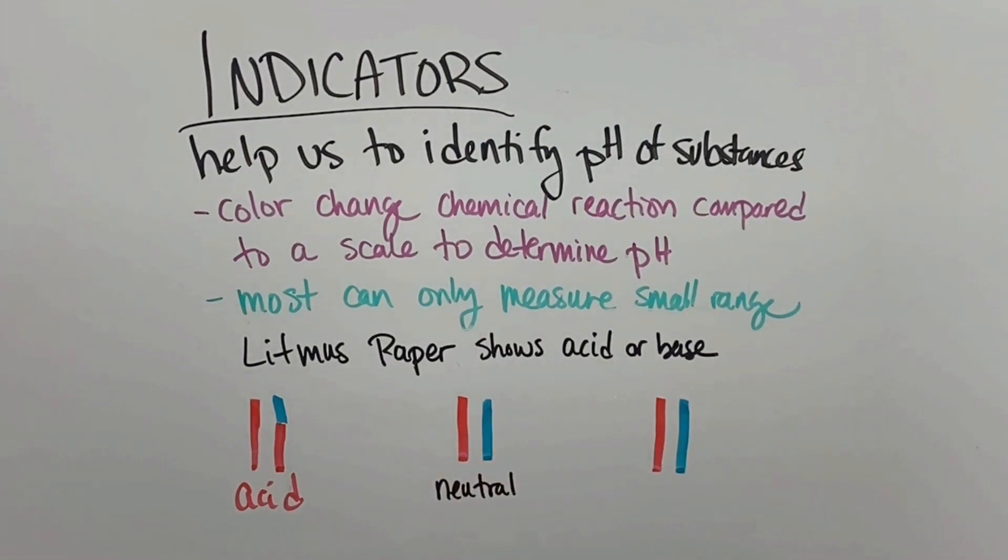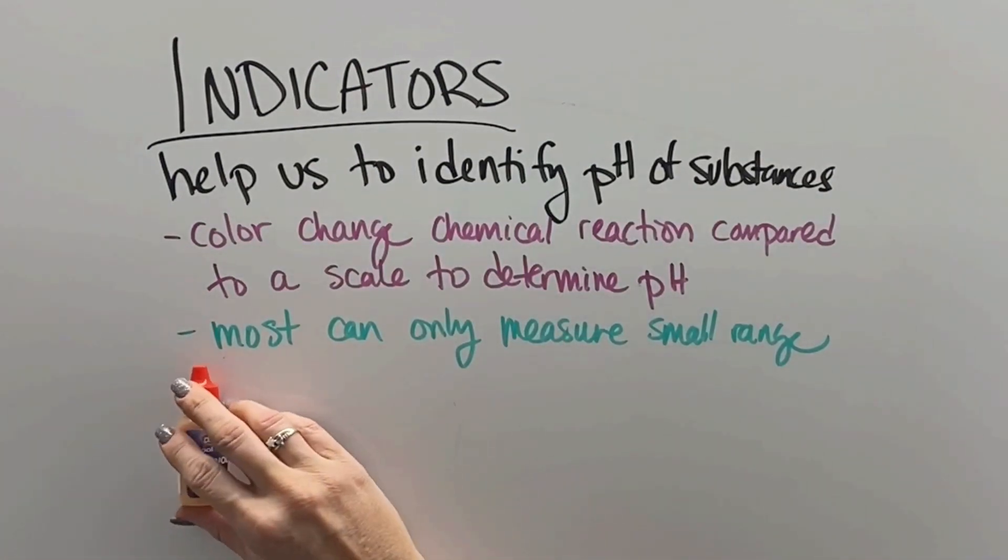If we dip both of them in and they stay the same color, they're neutral. And if we dip both of them in and the red turns blue and the blue stays blue, it's a base. But they can only tell us whether something is an acid or a base, not how strong it is.